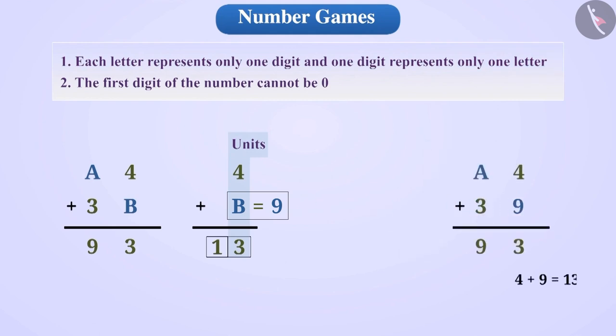Let us substitute the value of B as 9. Therefore, 4 plus 9 is equal to 13. So, 3 is in the units place and 1 is in the tens place.